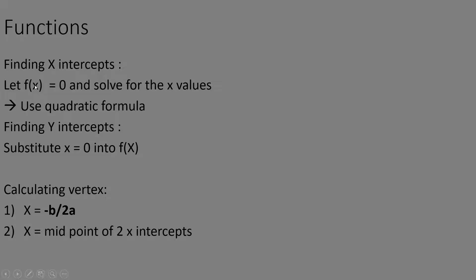To find x intercepts, let f(x) equal zero and solve for x. In certain cases you may need to use the quadratic formula — if the question says leave in exact form, use the quadratic formula. For y intercepts, substitute x equals zero into f(x). If you have two x intercepts, you can find the midpoint of the two roots to get the vertex.